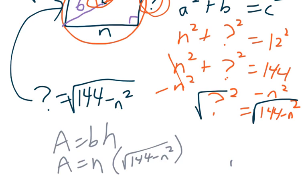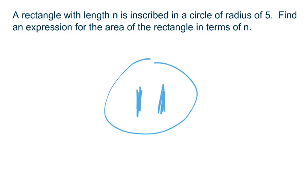Okay, why don't you try this one on your own? All right, go ahead and give it a shot. A rectangle with length n is inscribed in a circle of radius 5. Find the expression of the area of the rectangle in terms of n. Pause the video and try it.